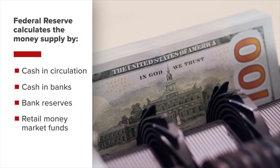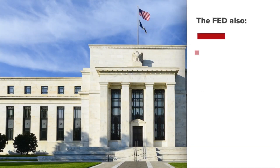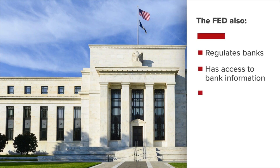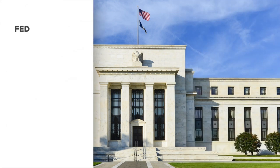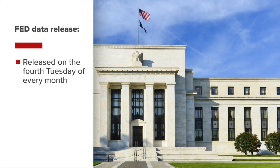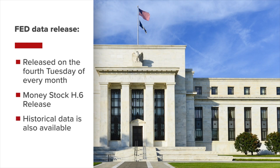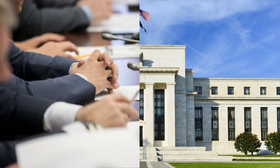The Fed also regulates banks, has access to bank information, and is able to publish data on the banking system. These data are released on the fourth Tuesday of every month at generally 1 p.m. It's published within the Money Stock H6 release to inform the public of the amount of liquidity or cash in the financial system, with detailed information for each component. Historical data is also available.